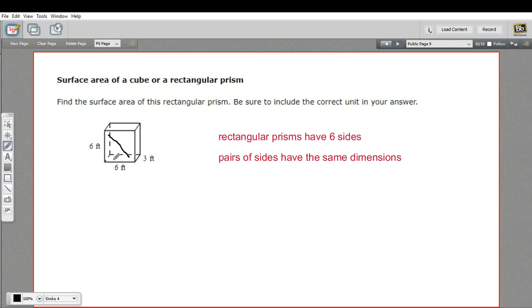For example, this side right here in front is 6 by 6. It's got a matching side in the back that is also 6 by 6. So let's take care of those two sides right away. I'm just going to write this as 2 times 6 by 6, and that's taking care of the front and the back.